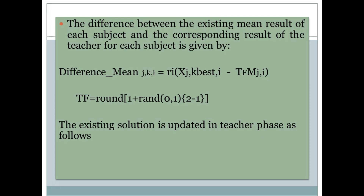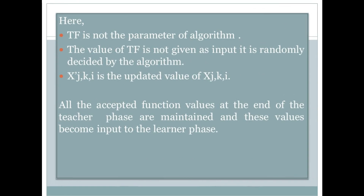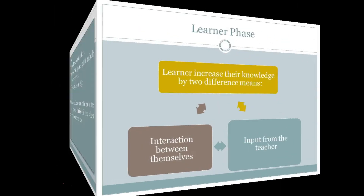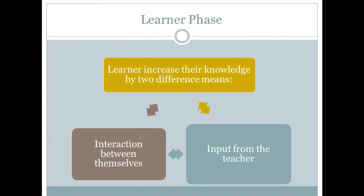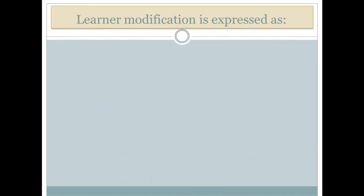The existing solution is updated in the teacher phase and then carried into the next phase — the learner phase. The one having the highest value will be the teacher, and this value will be carried to the next phase. TF is the teaching factor; the value will be good if you take 1 or 2. Moving to the second phase — the learner phase — the objective is that the learner must update their knowledge, done by either mutually interacting with each other or learning from the teacher.